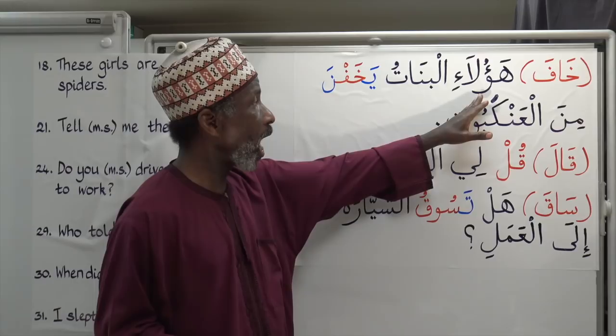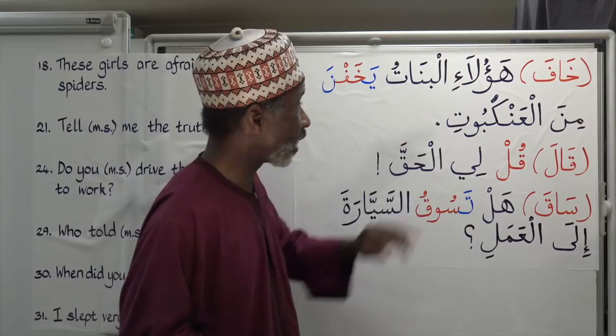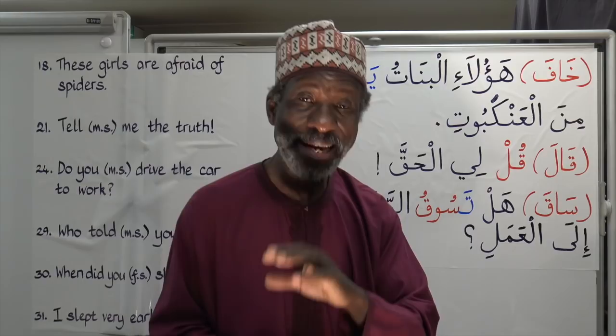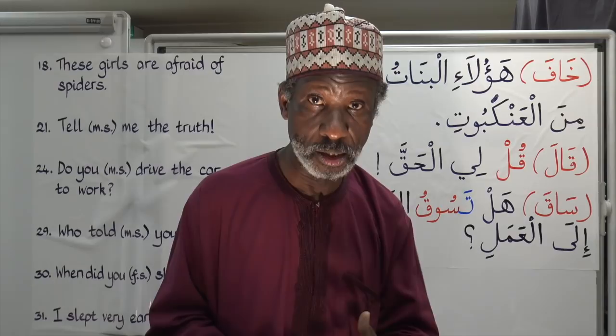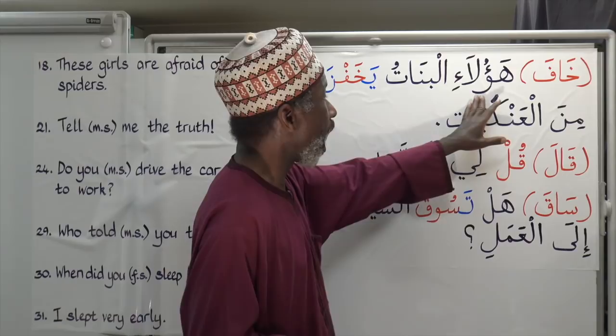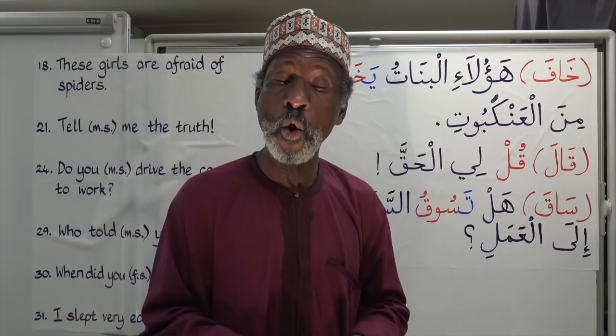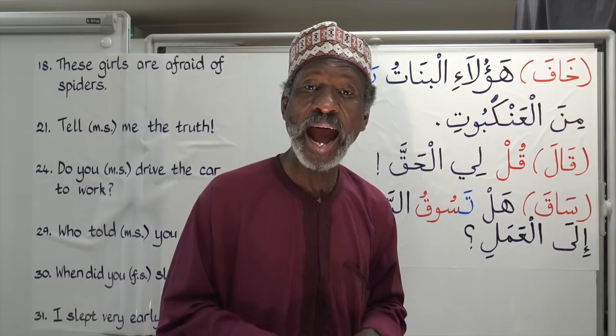Ha'ula'i al-banat — 'these girls.' As you know, ha'ula'i is a demonstrative pronoun used for human beings, plural (three or more), and it is gender neutral — you use it to refer to boys as well as girls. Ha'ula'i al-banat yakhafna minal ankabut — 'These girls are afraid of spiders.' Al-ankabut is spider; the plural is anakib.